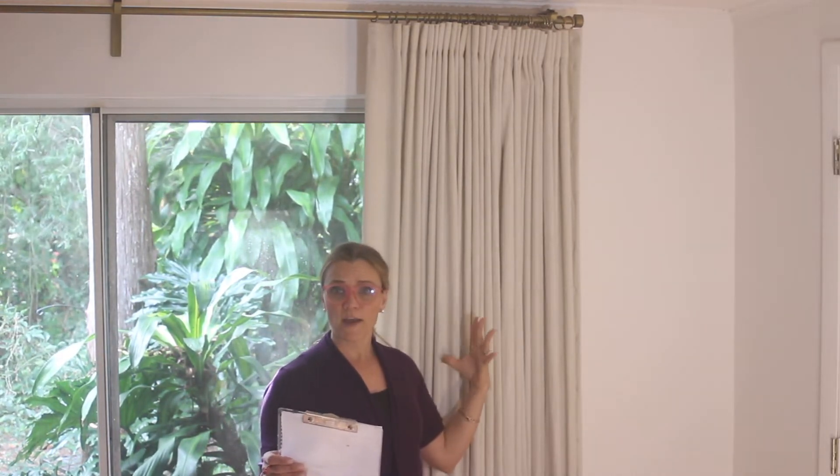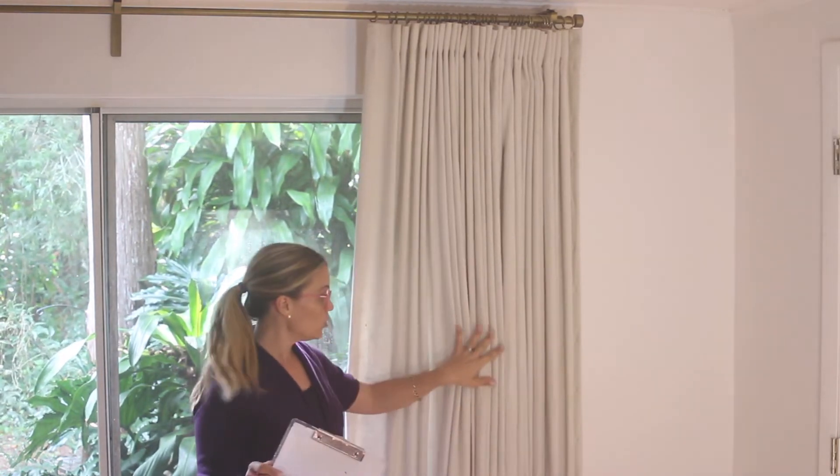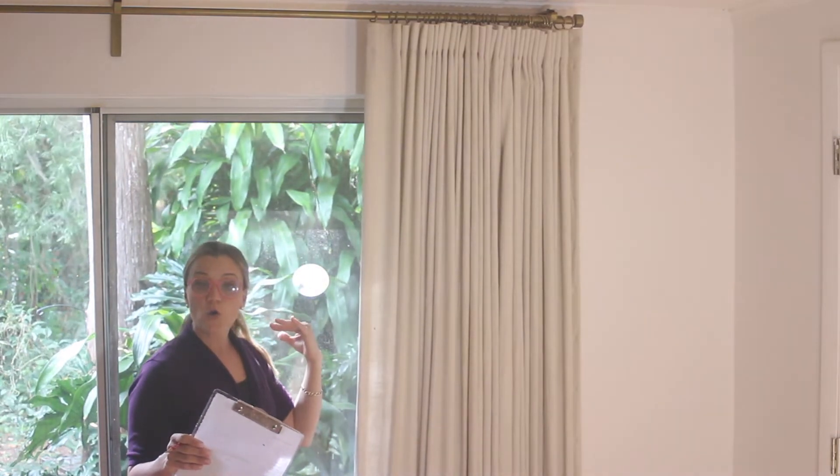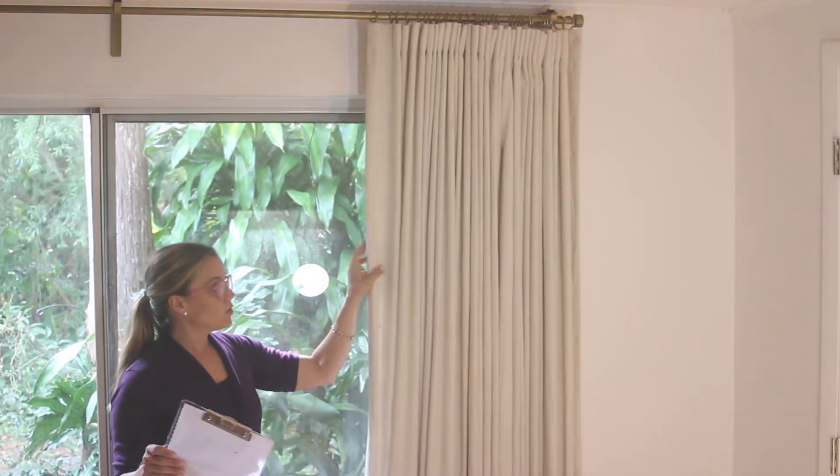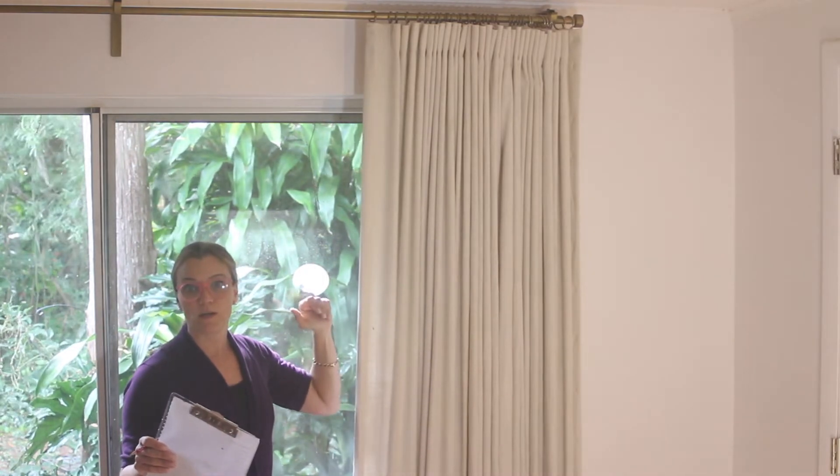The third thing to decide is whether your drapes are going to be operable — meaning will they open and close and are you going to use them for privacy — or are your drapes just going to be stationary and decorative on each side of your window because you have blinds or just don't need privacy? If you're going to open and close your drapes and you need them for privacy, you want to have enough fullness so they actually cover your window without being pulled completely flat across it like a sheet.